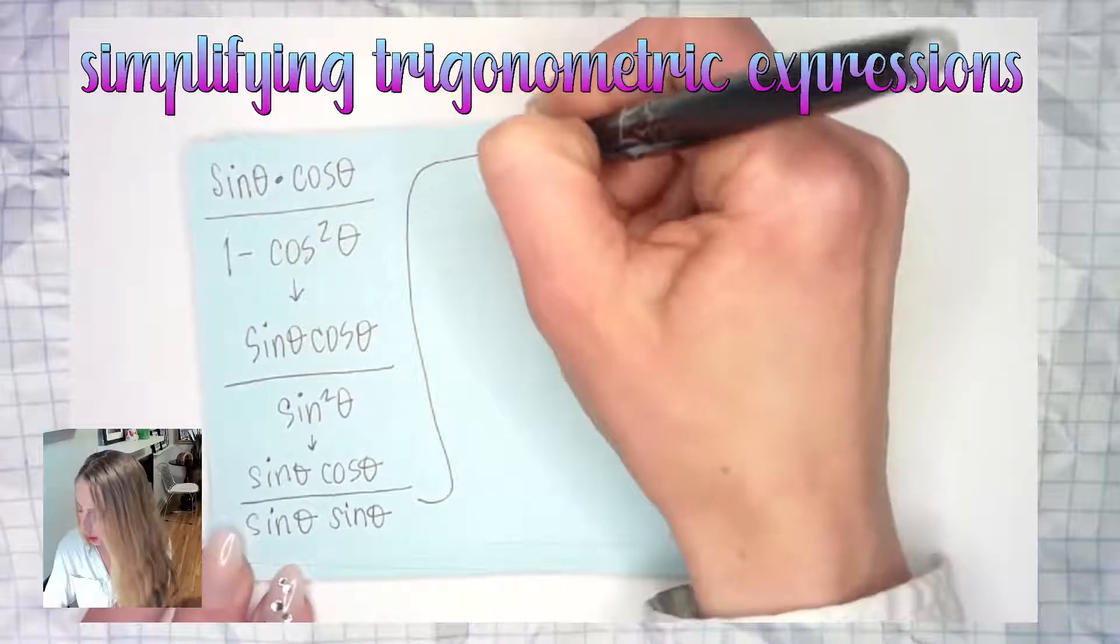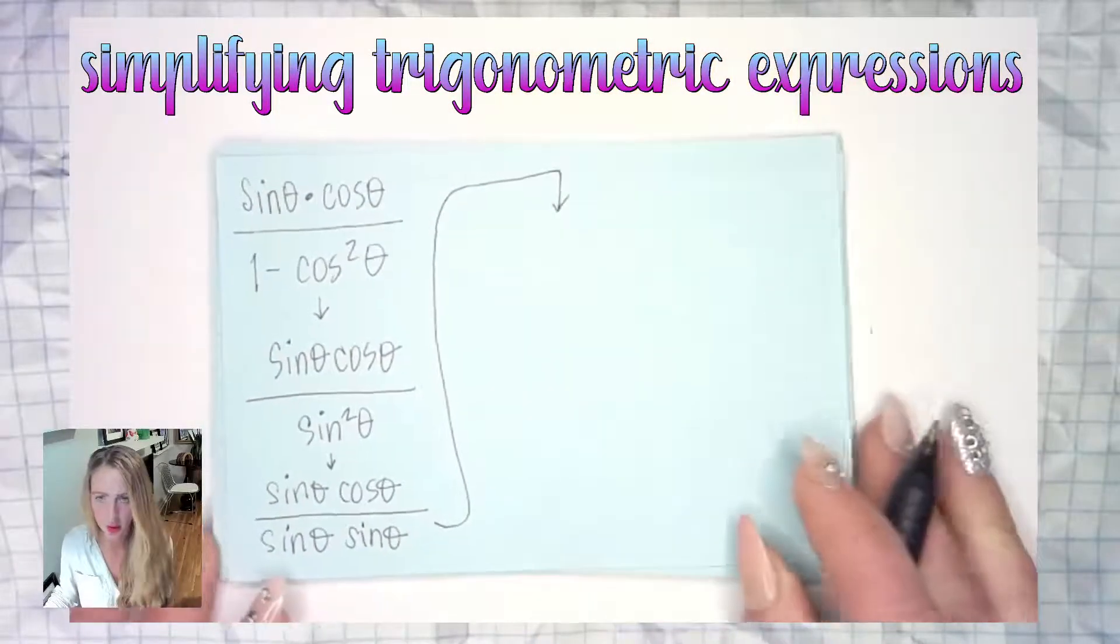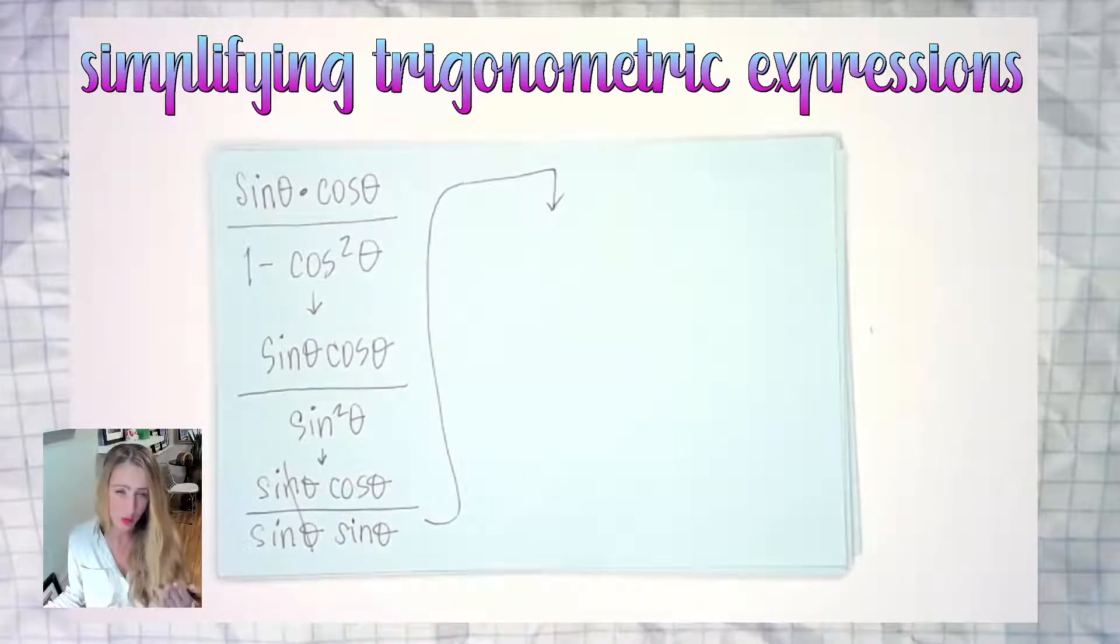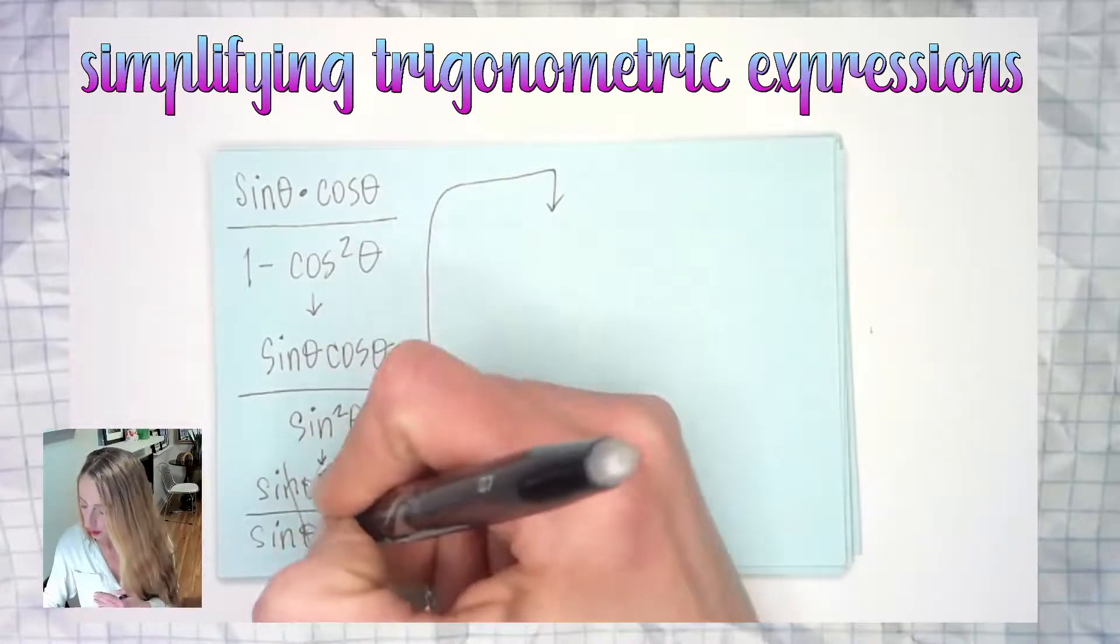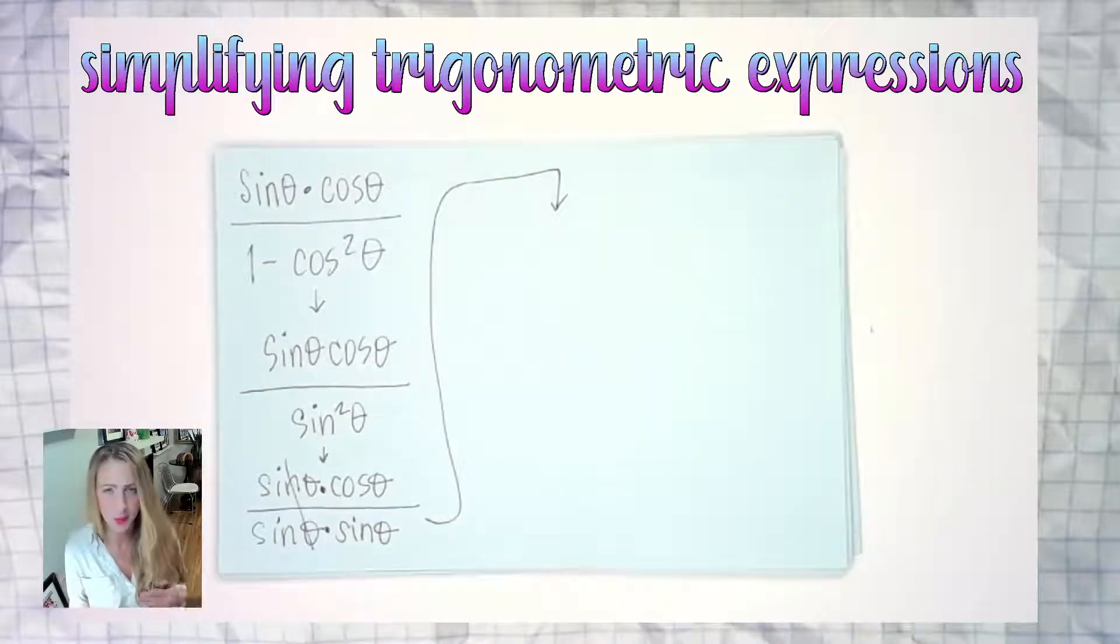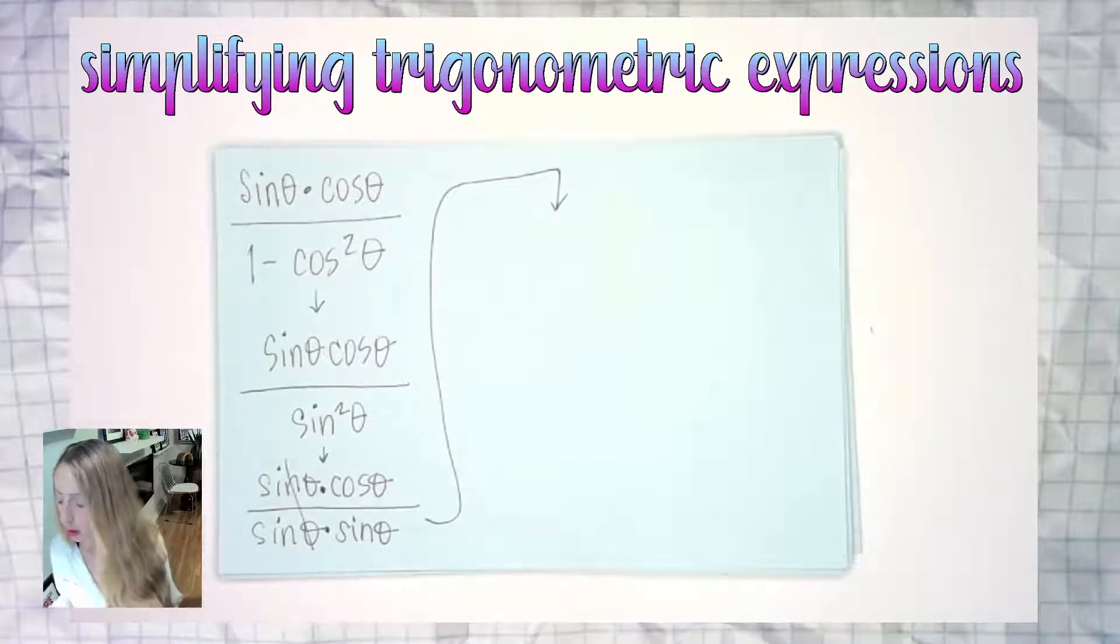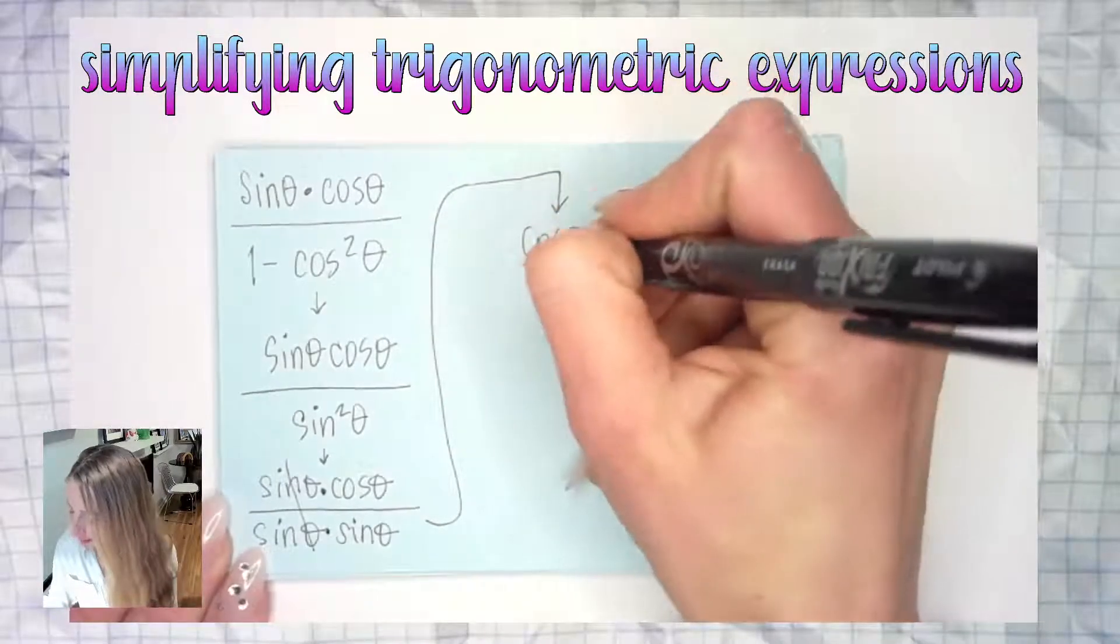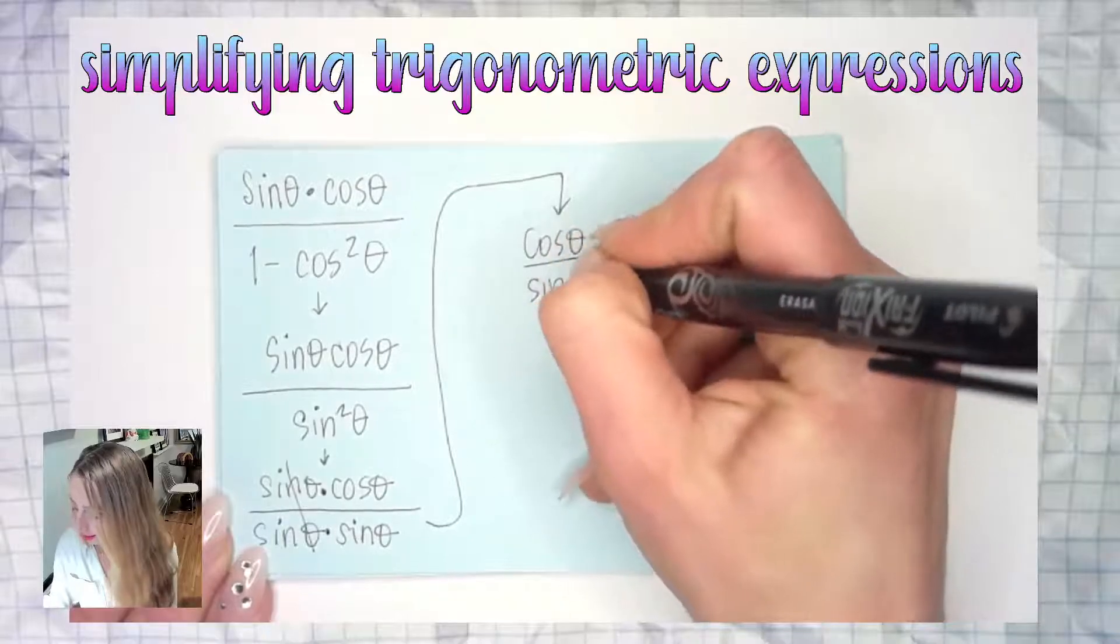From here where do we go next? Well sine theta over sine theta. Now that it's part of only a product, right? Multiplication and division. Only thing happening, division is multiplication. Multiplication is division. It's just the multiplication by the reciprocal. So what am I left with at this moment? I'm left with cosine theta in my numerator and I'm left with sine theta in my denominator.